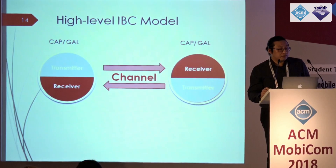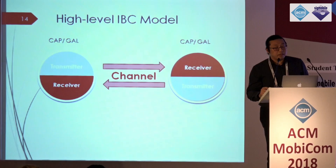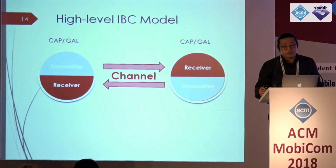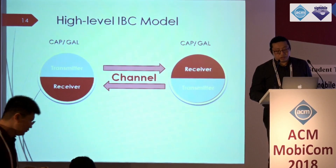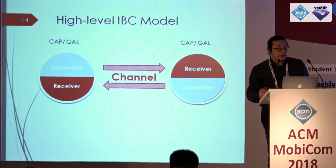Looking at the communication model of in-body communications, it is quite similar to typical communication models. We use either capacitive or galvanic coupling to build the transmitter and receiver around the human body and use the human body as the channel. To better serve the communication purpose, in addition to studying how to build the transmitter and receiver, we also need to learn the channel, and there is more research focusing on channel properties, modeling, and signal propagation in the human body.